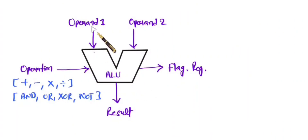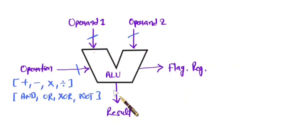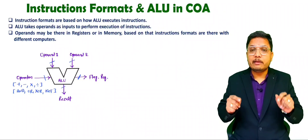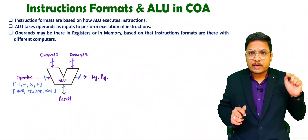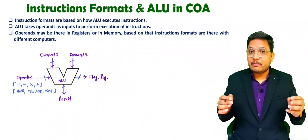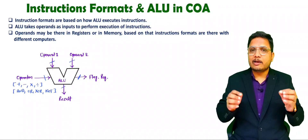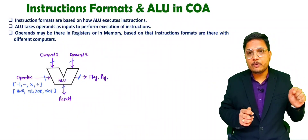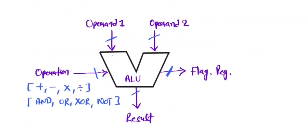Based on that operation, ALU will take operands as input and perform the logical or arithmetic operation to produce a result. Remember, these are not single-line inputs — they are multiple-bit lines. ALU will take operands as input and the operation input defines which kind of operation will be performed. Now let us understand this same thing along with instruction format. Those operands may be inside registers of CPU or at memory locations.